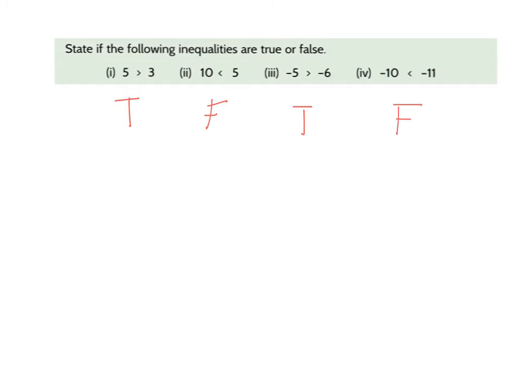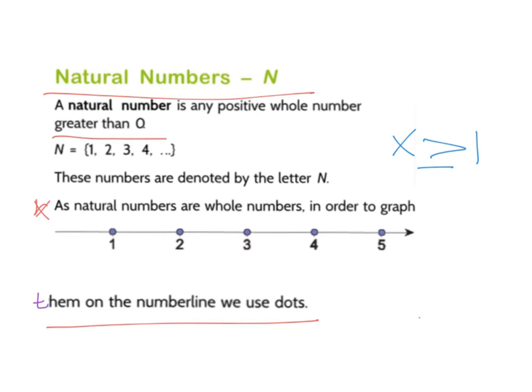Okay, so first of all, we're going to look at reading them and then we're going to bring in the algebra to it. So we spoke about natural numbers before and a natural number is any positive whole number. The symbol for natural number is N. And if I ask you to draw an inequality expression like this, where X is greater than or equal to 1, and I ask you to draw it on the number line, you use dots to show that it only counts for 1, 2, 3, 4, and 5.